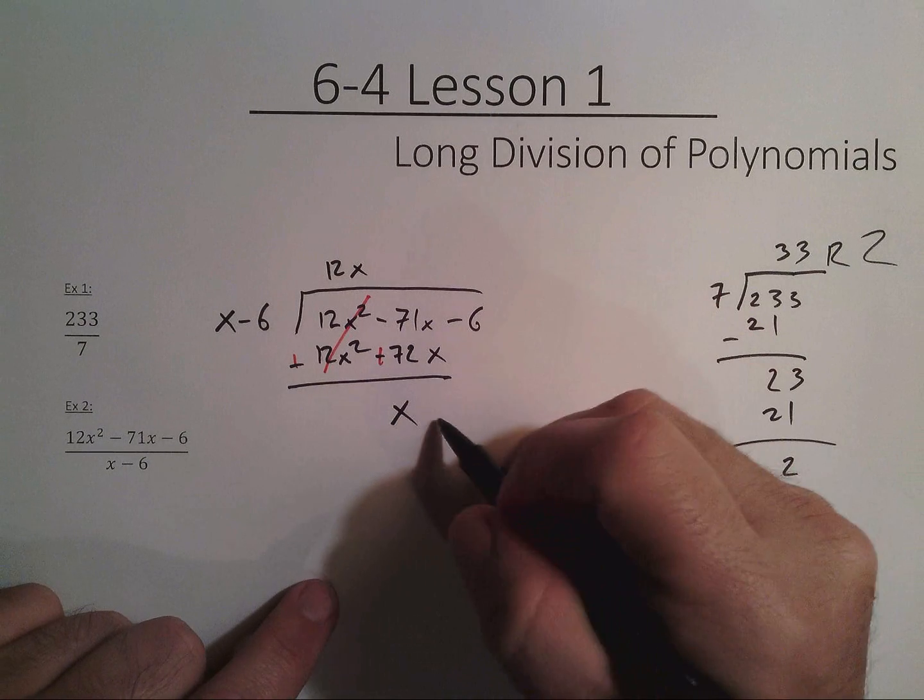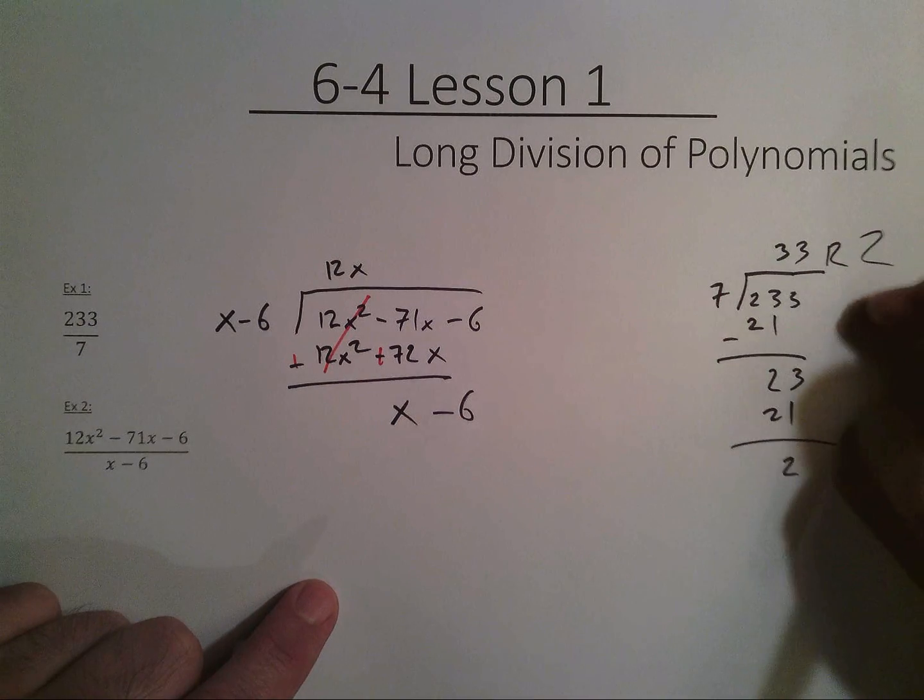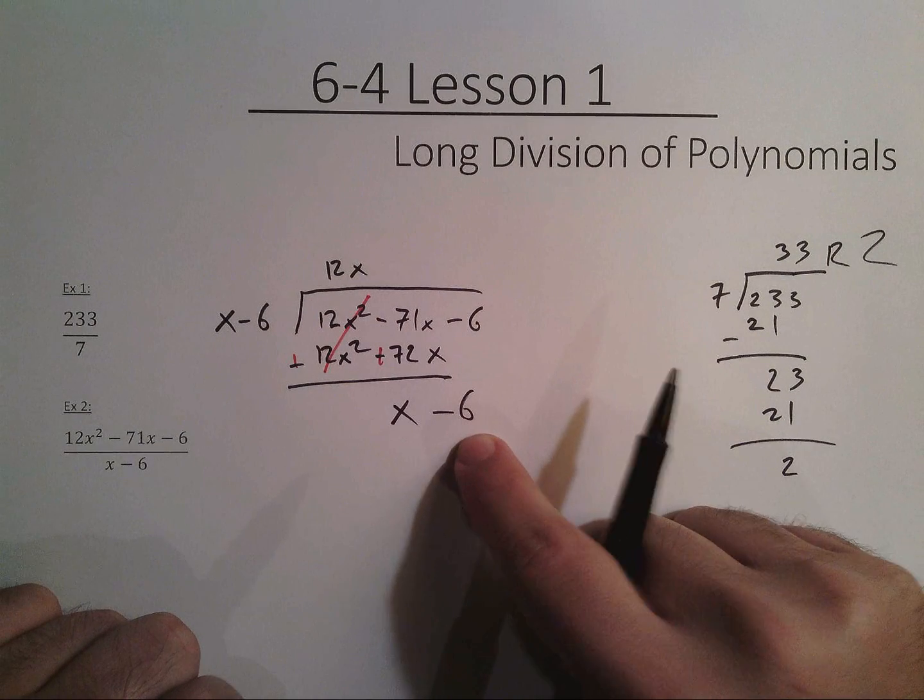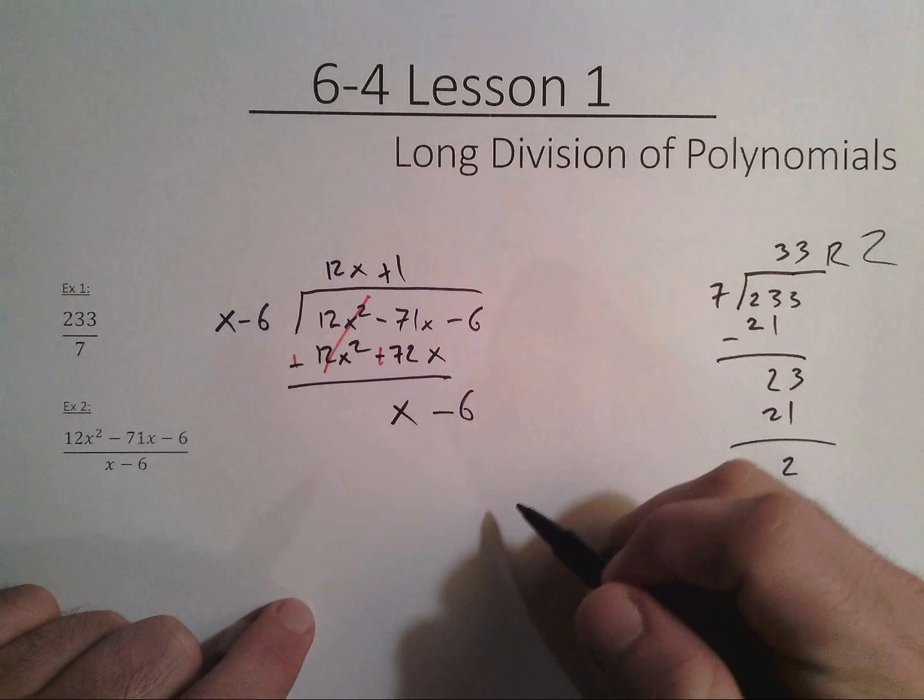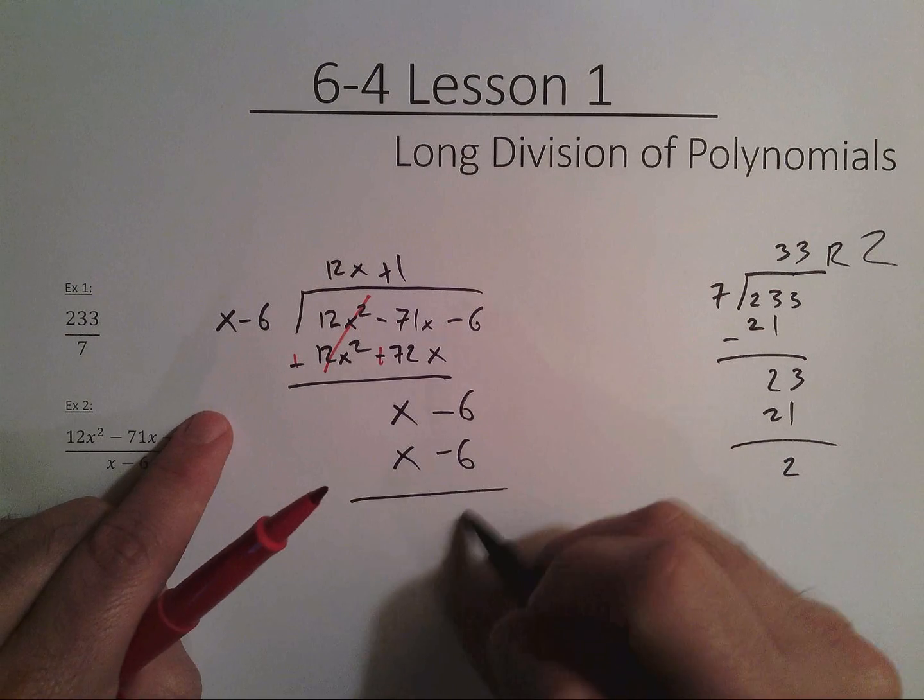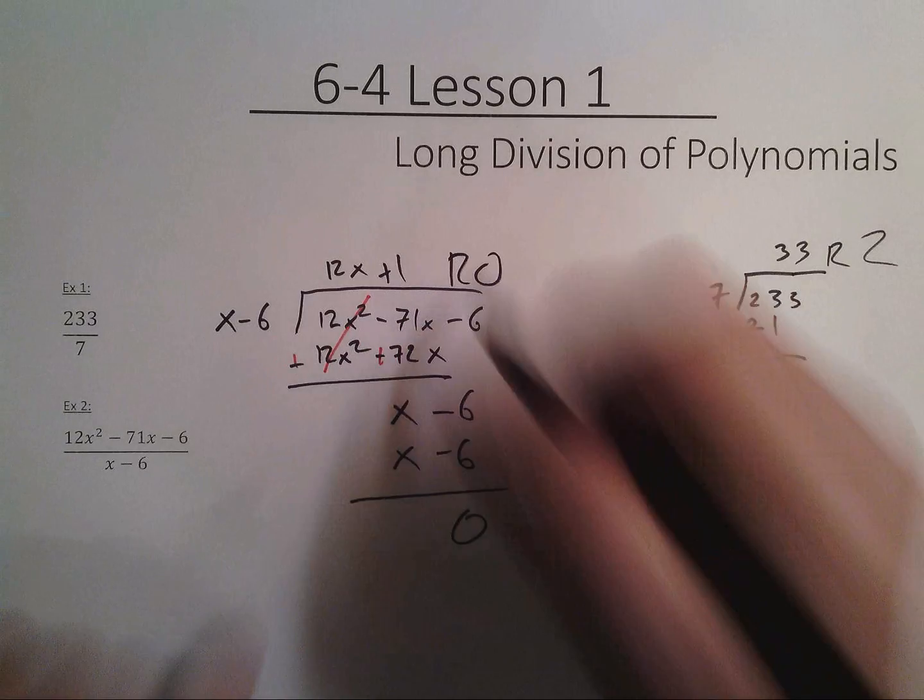Drop down the next thing. Notice it's the same stuff we're doing over here. Does x minus 6 go into x minus 6? It sure does. It goes in there positive 1 times. So x goes into it once, 1 times negative 6 is negative 6. Hey look, remainder 0.